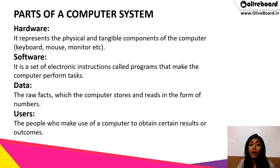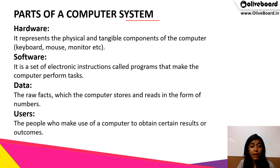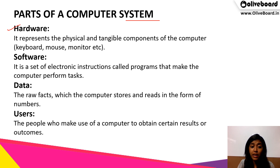Let's start with the parts of a computer system. When we see a computer system as a whole, it consists of 4 parts: hardware, software, data, and users.